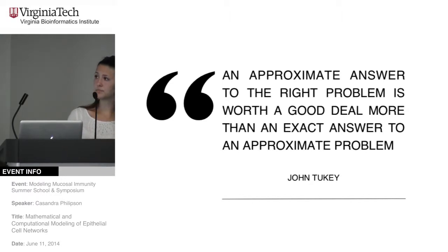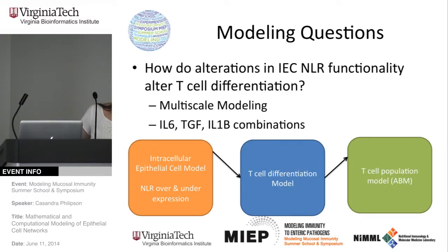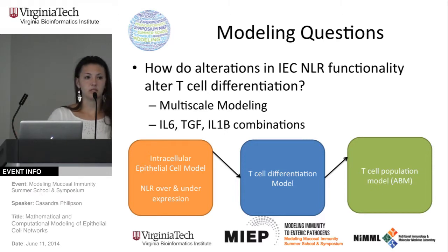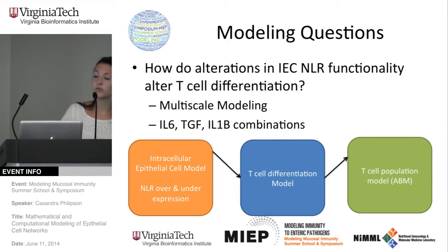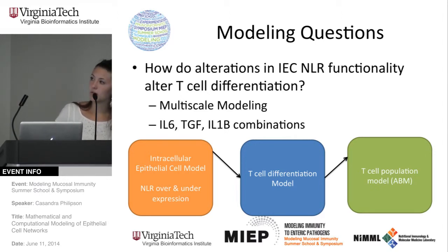One modeling question might be: how do alterations in intestinal epithelial cell or NLR functionality alter T cell differentiation? Assume we have our calibrated epithelial cell model and can overexpress or underexpress NLRs and grab some cytokine outputs specific for TH17. We link those up with Audrey's model and use those as inputs. Now we can make really fast predictions of what's going on between these two cell types.